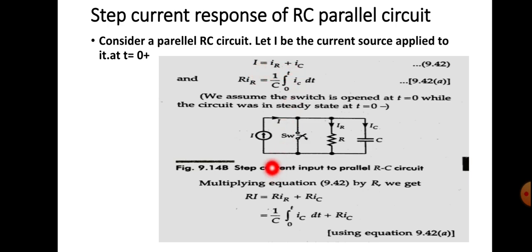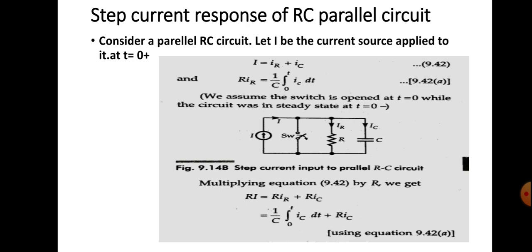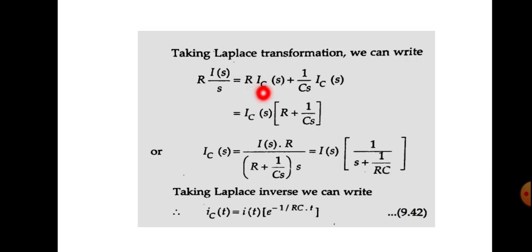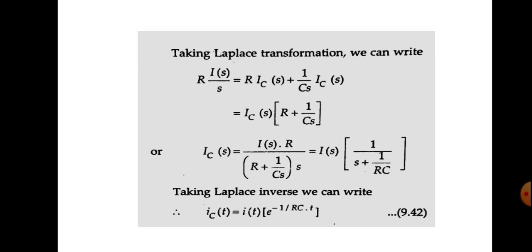Multiplying the first equation by R gives R·I equal to R·IR plus R·IC. Substituting R·IR with the integral expression gives R·I equal to (1/C)·integral from 0 to t of IC·dt plus R·IC. Taking the Laplace transform: R·I(S)/S equals R·IC(S) plus (1/CS)·IC(S). Taking IC(S) as common gives R·I(S)/S equal to IC(S)·(R + 1/CS).